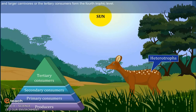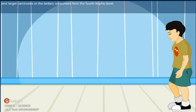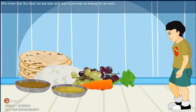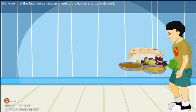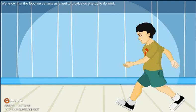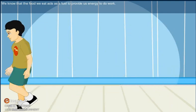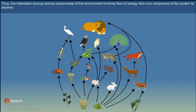And larger carnivores or the tertiary consumers form the fourth trophic level. We know that the food we eat acts as a fuel to provide us energy to do work. Thus, the interaction among various components of the environment involves flow of energy from one component of the system to another.